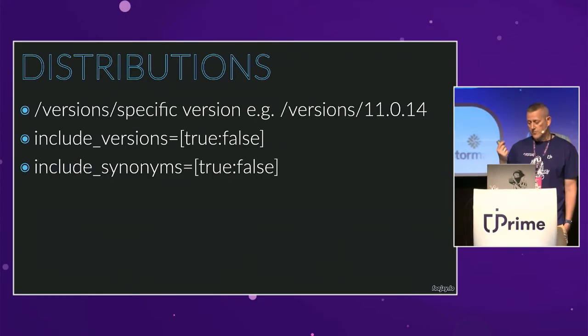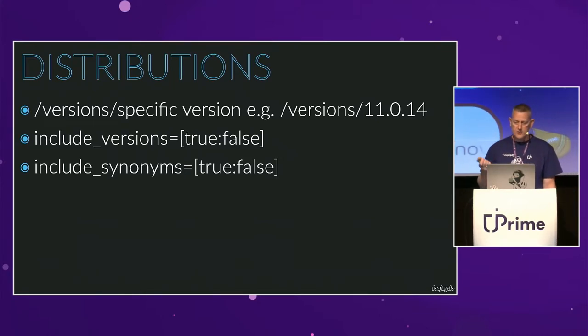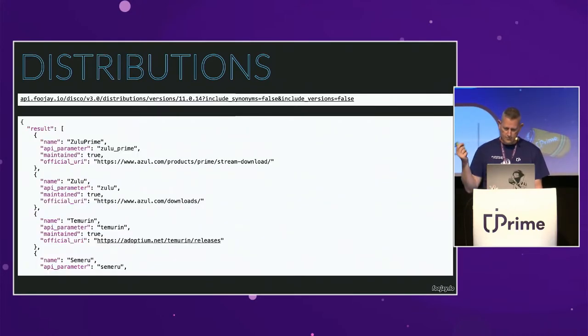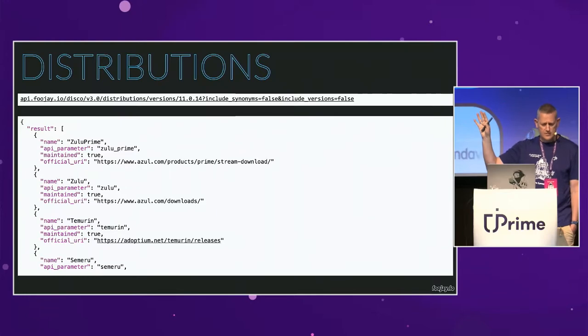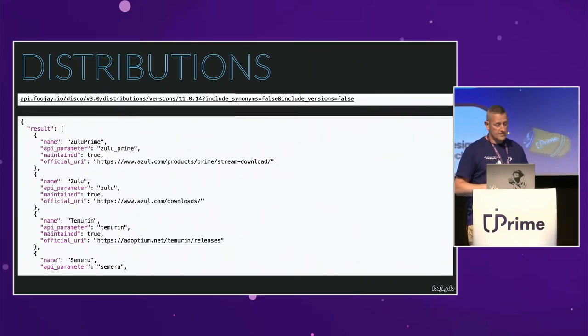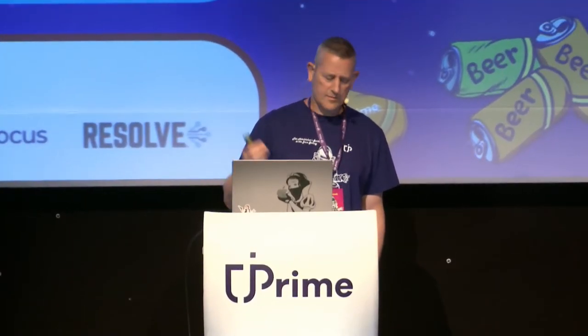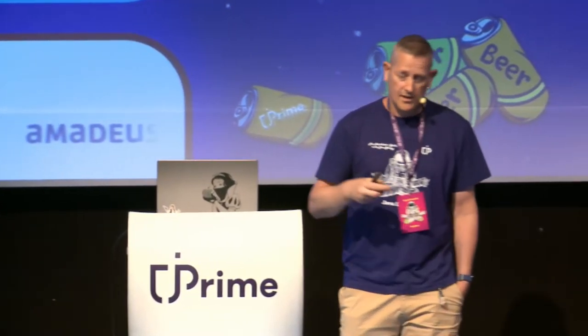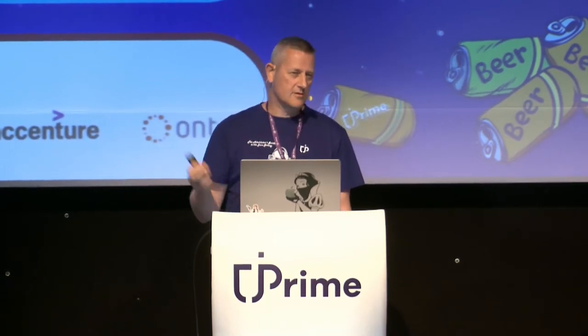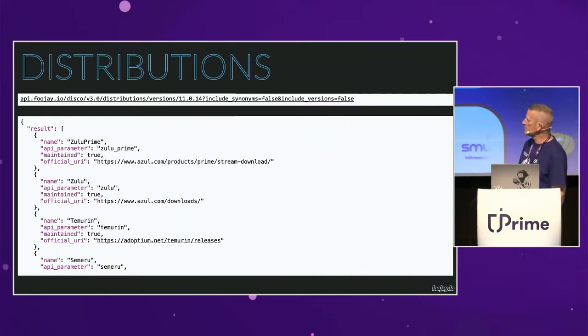You can also query for a specific version like 11.0.14 to find which distributions support it — useful if a customer says 'we're running SAP Machine 11.0.13' and you need to set up your machine. Just type the version number in the endpoint and you'll get a list of all distributions supporting that version. That's the main purpose of the distributions endpoint.